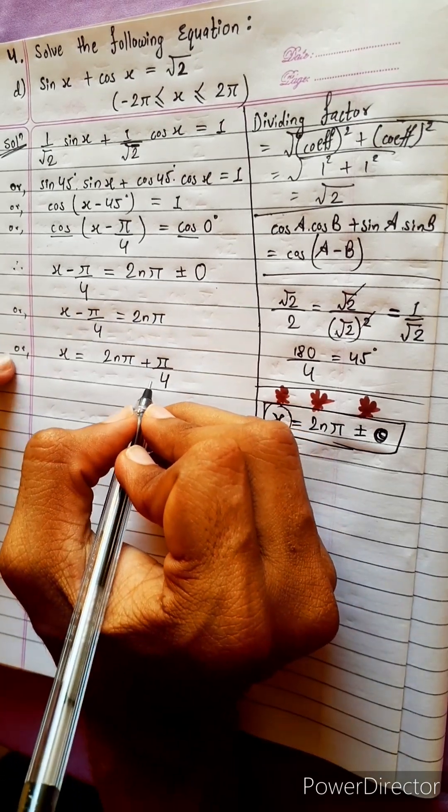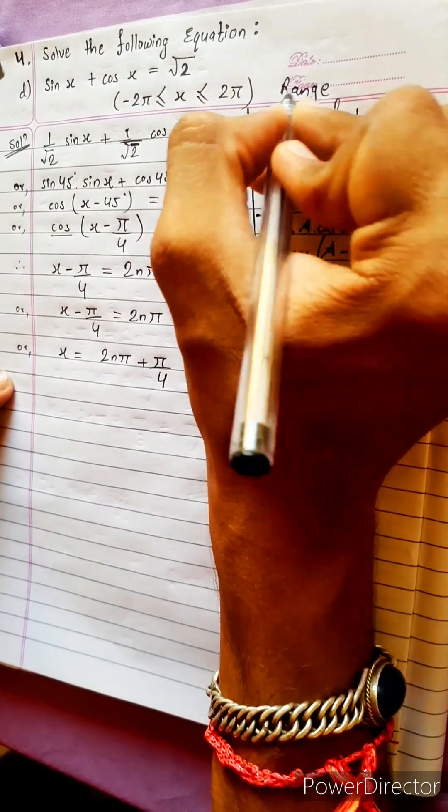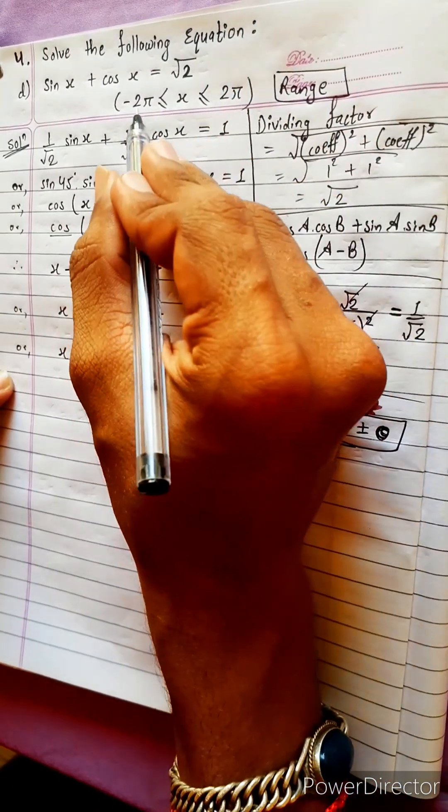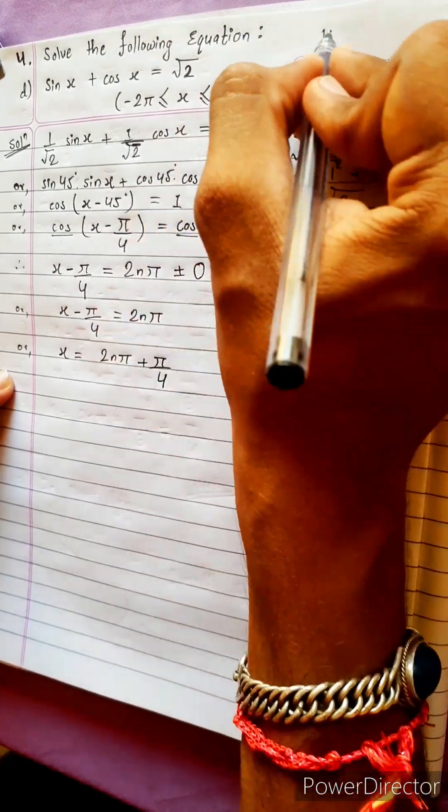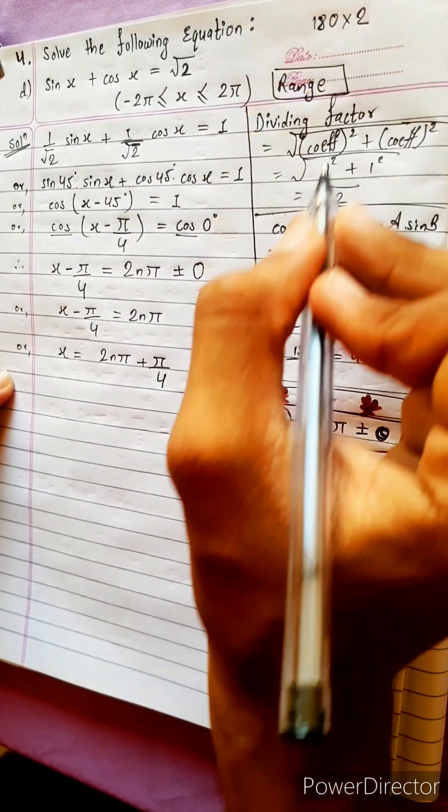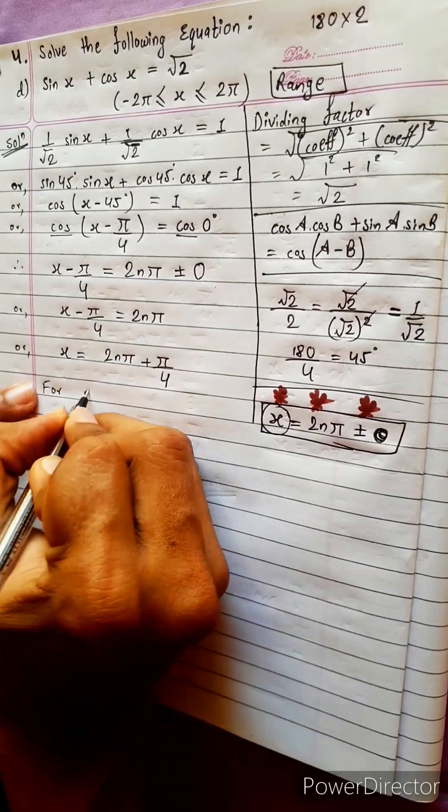Now what we can do? Can we do anything? Yes, we can do a lot of things. We have to check in this range. If value belongs to this range or not. Minus 360 plus 360. 180 into 2, this is 180 into 2, 360. Okay, let's check. First of all, n equals to 0.